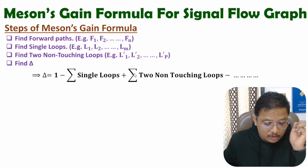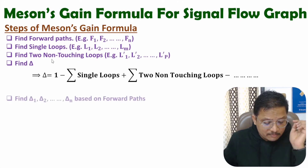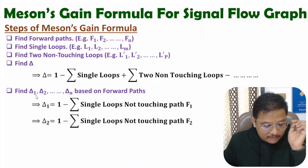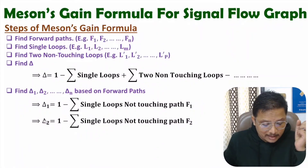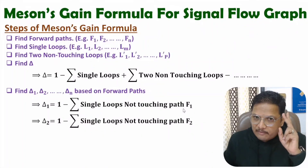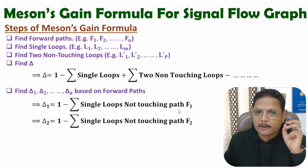Usually we don't have more than two non-touching loops in 99% of questions. After that, we need to identify delta_i. Delta_i calculation is based on forward paths. So if you have two forward paths, we will identify delta 1 and delta 2; if three forward paths, delta 1, delta 2, and delta 3. That calculation is 1 minus summation of loops which are not touching the given path. For path F1, delta 1 is 1 minus summation of single loops not touching forward path F1.